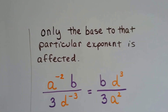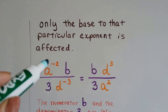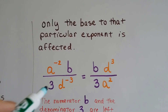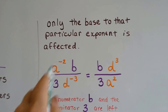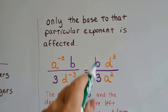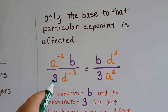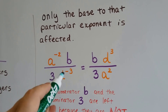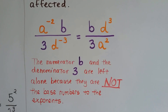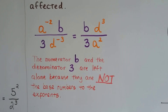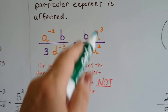Only the base to that particular exponent is affected. If we had two variables and only one of them was negative, and we had a coefficient like 3 in front of the variable that was negative, when we flipped them around, the b and the 3 are going to stay where they belong. The b stays as the numerator and the 3 stays as the denominator. It's just these two guys that flip. The numerator b and denominator 3 are left alone because they're not the base numbers to the exponents. Only the base numbers and the exponents get flipped and turned into positives.